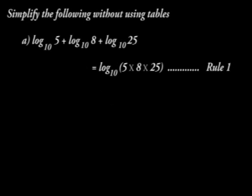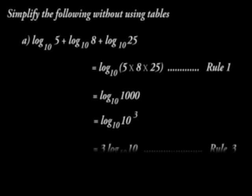we have log to base 10 into 5 times 8 times 25, following rule 1. And we shall have log to base 10 of 1000, which gives us log to base 10 of 10 raised to power 3 and is also equal to 3 log to base 10 of 10, which follows rule 3. And the answer is 3.